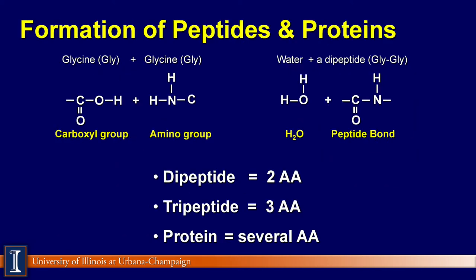Peptides and proteins can be formed by hooking amino acids together with chemical bonds. If adequate energy is available, two amino acids can be hooked together with a chemical bond between the amino group of one amino acid and the carboxyl group of the second amino acid to form a dipeptide.